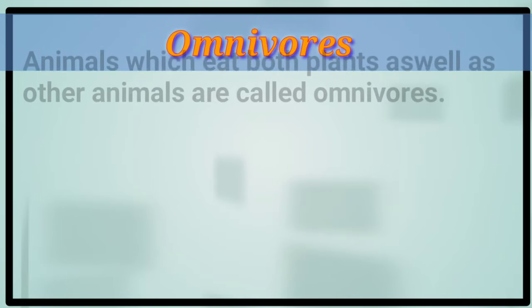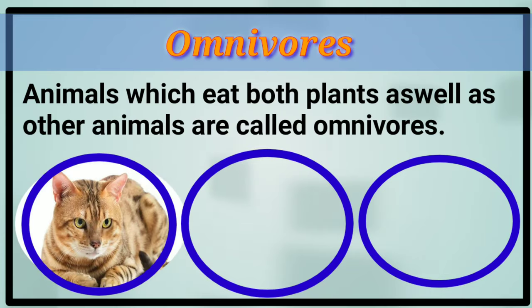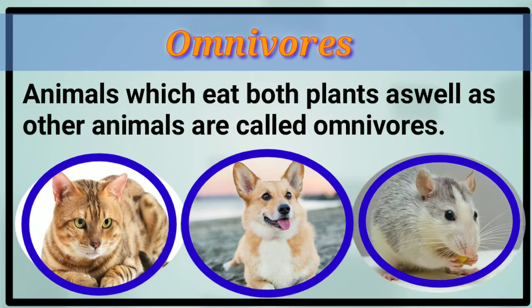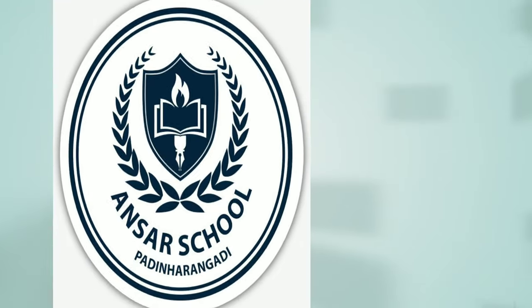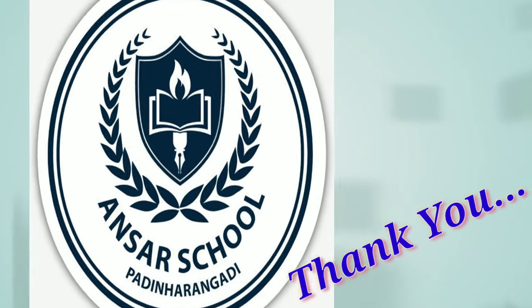Animals which eat both plants as well as other animals are called omnivorous. Examples: cat, dog, rat, etc. Dear students, I hope you have all understood these categories. Thank you.